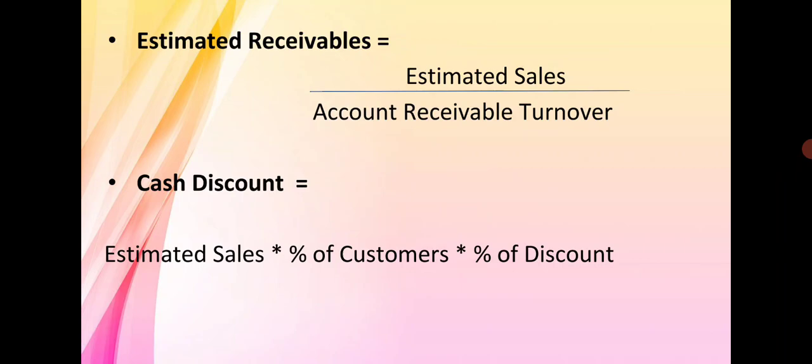There are a few formulas. The first one: estimated receivables is equal to estimated sales divided by account receivable turnover. Account receivable turnover is equal to 360 days divided by the average collection period — that is, how many days it takes to collect the credit. The formula is given on page number 264.